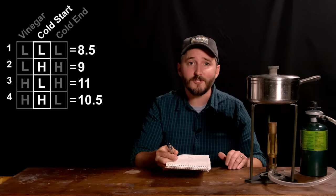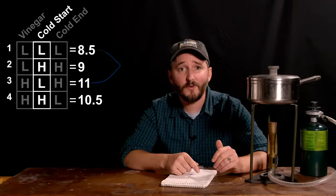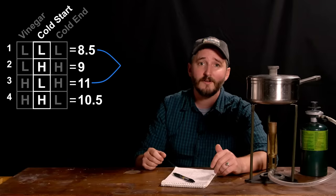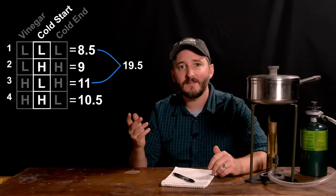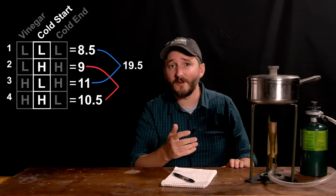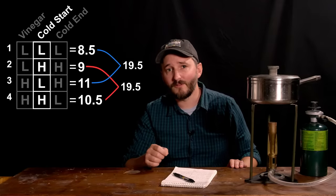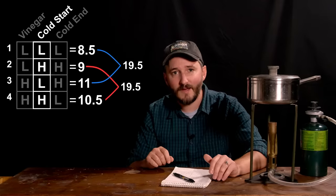Let's look at the egg's starting temperature first. If we take the two tests where the eggs started at room temp and add their scores together we get a total of 19.5. Now taking the other two tests where the eggs started in ice water and totaling their scores we also get a total of 19.5.